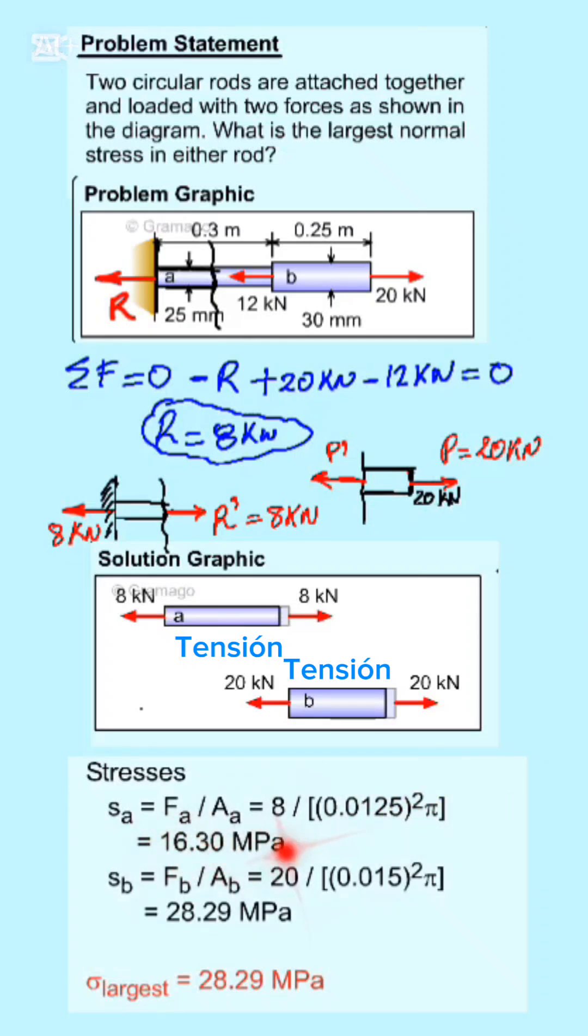For the other section, the load is 20 kilonewtons. The cross sectional area is pi times the radius squared. Since the diameter is 30, the radius is 15, that is 0.015 meters squared. This gives me 28.29 megapascals.